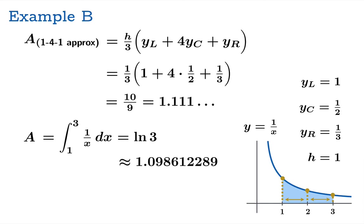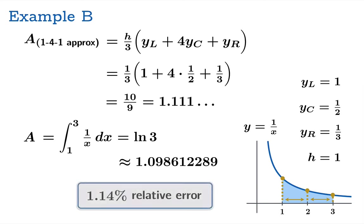Again, pretty good — though not quite as good as before. The relative error is a little over 1%. Once again, this reflects the fact that the quadratic polynomial through the three sample points is a pretty good fit of the original graph, so we're getting a decent approximation — just not quite as good as the first example.